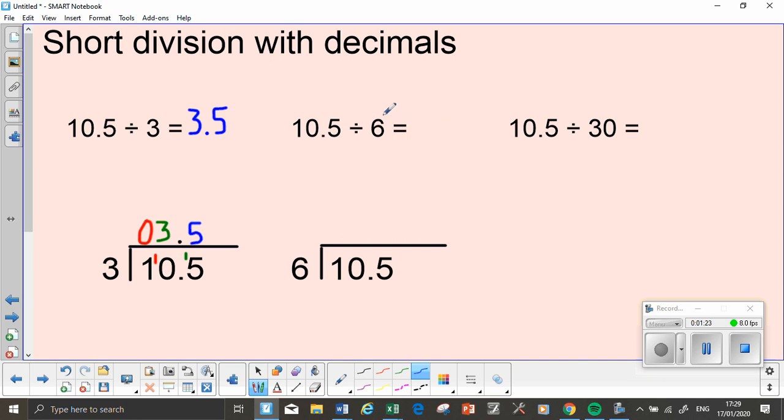The answer is going to be half because I'm dividing it by double the amount. My divisor is double - 6 is double of 3. I'm going to go through the short division method anyway.